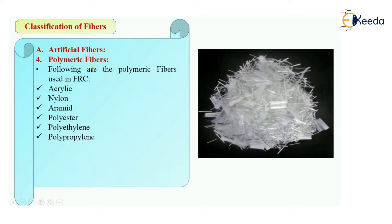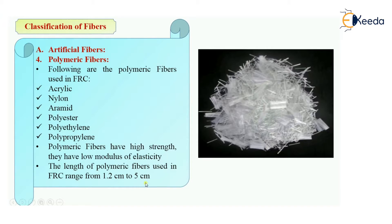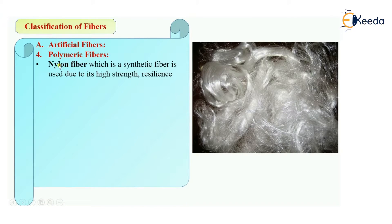The word 'polymeric' comes from 'poly' meaning many, so this type of fiber will have many parts — many threads or shreds, as you can see in the pictures. Polymeric fibers will have high strength and low modulus of elasticity. The length of polymeric fibers will be in the range of 1.2 centimeters to 5 centimeters.